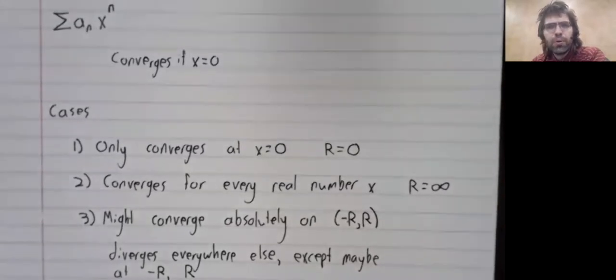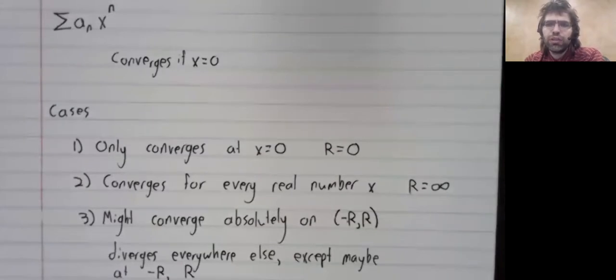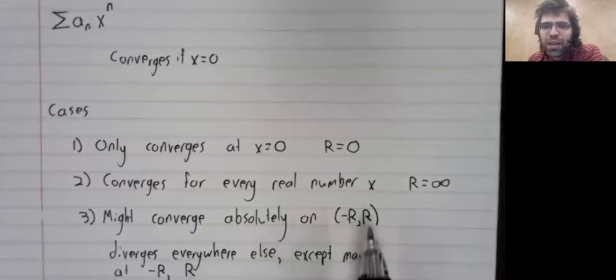This is a power series centered about zero. But this material all generalizes for power series centered elsewhere. That's just before I flip the page. Where does the terminology come from? It comes from the fact that this interval of convergence is literally centered at zero.